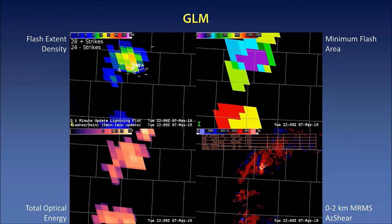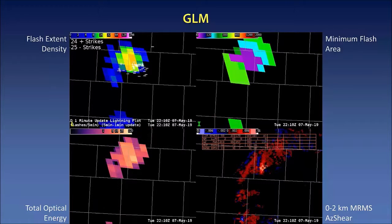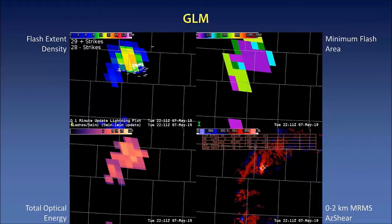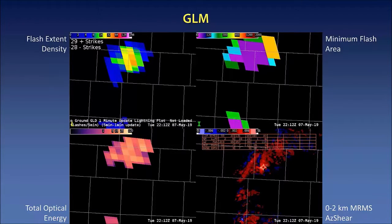About 5 to 10 minutes before the first report of a tornado came in, we see that the flash extent density is pretty much peaked out. And then 22-12 was the time of the first tornado report in the LSR database. You can see that we've maintained that same intensity.